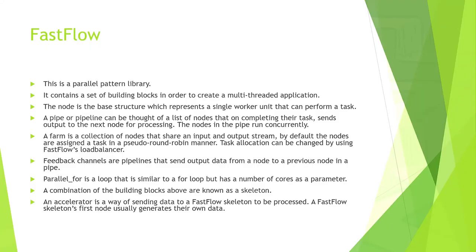Fastflow is a parallel pattern library. It contains a set of building blocks in order to create a multi-threaded application. The node is the base structure which represents a single worker unit that can perform a task. The pipe or pipeline can be thought of as a list of nodes that, on completing their task, sends output to the next node for processing. The nodes in the pipe run concurrently.